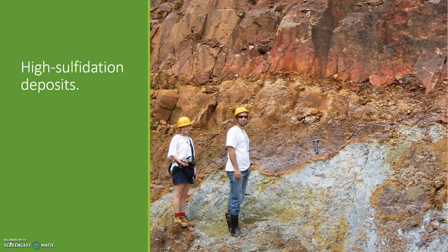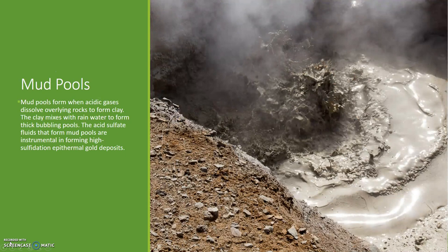High sulfidation epithermal deposits are also associated with surface geothermal features such as mud pools and fumaroles. This image shows a mud pool at the Reykjadalur hot springs area in Iceland. Mud pools form when acidic gases dissolve overlying rocks to form clay; the clay mixes with rainwater to form thick bubbling pools. The acid sulfide fluids that form mud pools are instrumental in forming high sulfidation epithermal gold deposits.